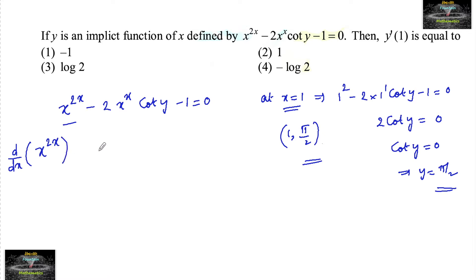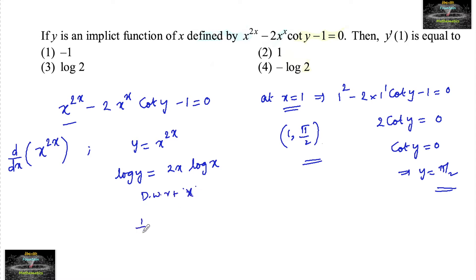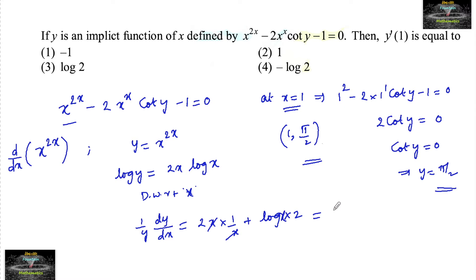For d/dx of x to the power of 2x: put y equal to x to the power of 2x and apply log on both sides, so log y equals 2x log x. Differentiating with respect to x gives 1/y · dy/dx equals 2 times (x · 1/x plus log x · 2), which simplifies to dy/dx equal to 2 times x to the power of 2x into 1 plus log x.